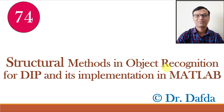We are learning object recognition, and in the previous video class we studied decision theoretic methods of object recognition. In this video class we will study structural methods of object recognition. These methods are called structural methods because here we take into account the structures of different shapes. These are qualitative methods where we look at the quality — for example, the value of shape number — and if the order and the value of shape numbers matches with the object we want to recognize from our database, then that will be a correct match. So rather than the quantity of the object such as area, we are more interested in the quality of the object such as shape number.